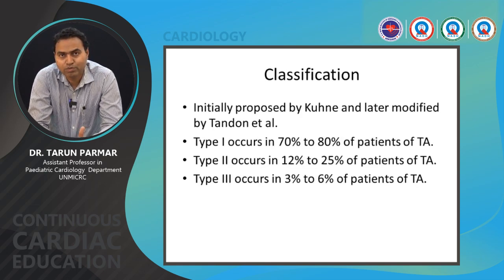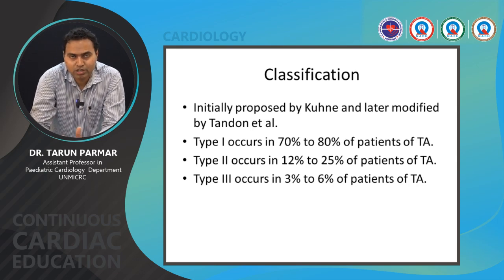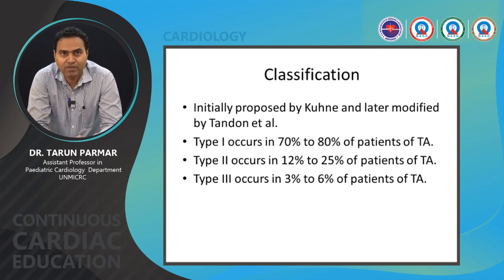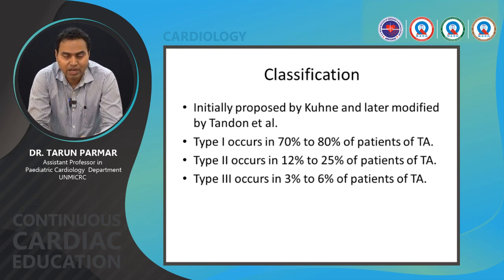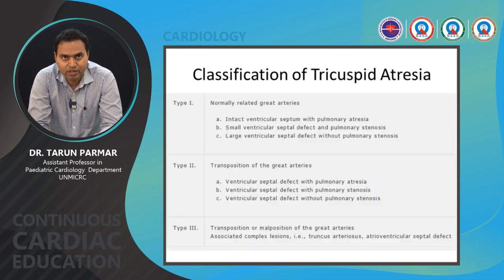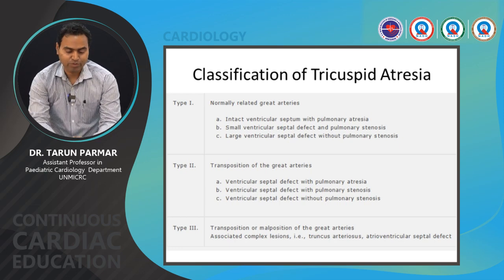The classification proposed by Kuhne and later by Dr. Tandon broadly divides tricuspid atresia into Type 1, 2, and 3. Type 1 is the most common, comprising 70–80% of cases; Type 2 accounts for 12–25%; and Type 3 is rare at 3–6%.